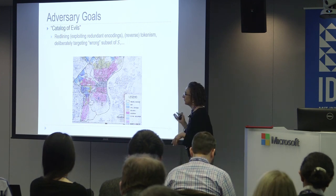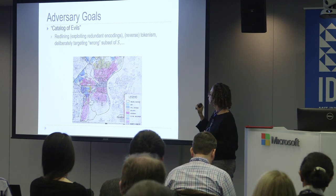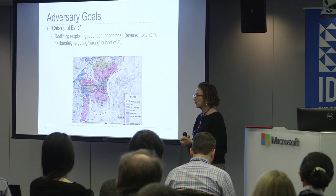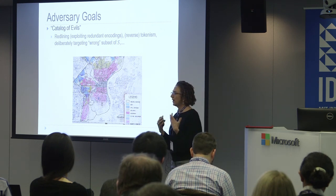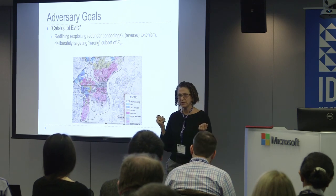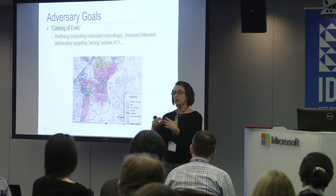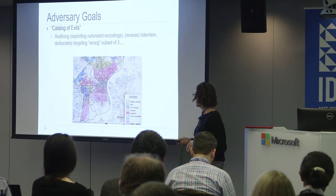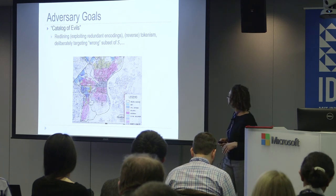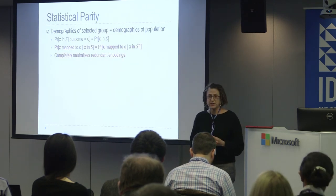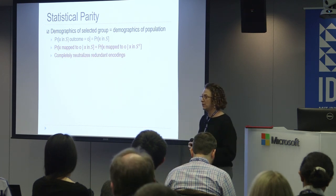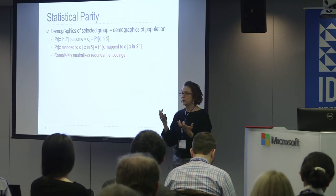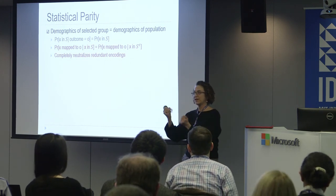We also had various other things in the catalog, including one I'll highlight: deliberately targeting the wrong subset of your minority group. Suppose you had some notion that you have to send an ad equally to people of different races, but for some race you only send the ad to people who can't afford the service. Then you send the ad equally, but what you're doing is clearly not fair in some sense. So that does bring us to statistical parity, which is many people's first go-to notion of what fairness might mean.